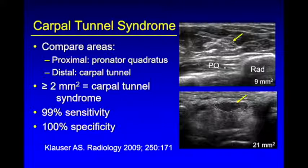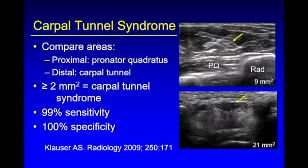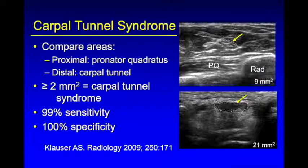We measure proximally at the level of the pronator quadratus and at the wrist crease where the nerve is largest. If the area increases by 2 mm² or more, that gives 99% sensitivity and 100% specificity. To be honest, I typically don't measure all these nerves when I think they're enlarged. If I'm scanning distally in short axis and the nerve becomes hypoechoic and enlarged then compresses, I don't care what the number is — that nerve is abnormal. When you push on a hypoechoic nerve, the patient will tell you it's irritated. You can use numbers, but I make up my mind most of the time subjectively.